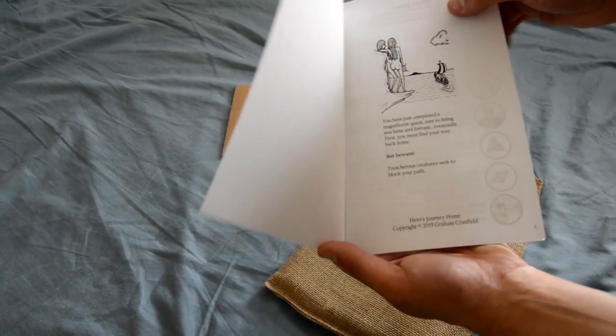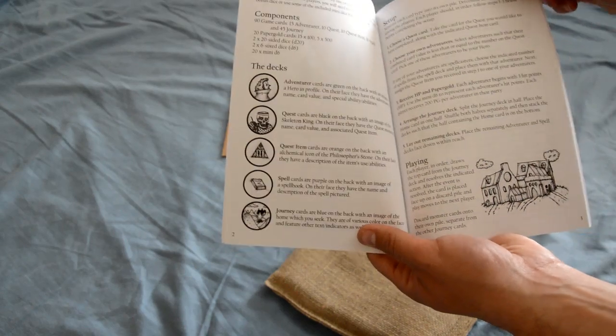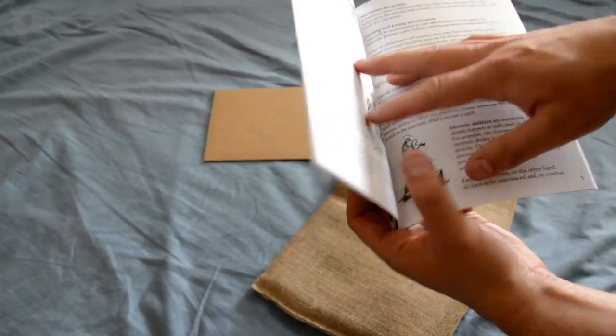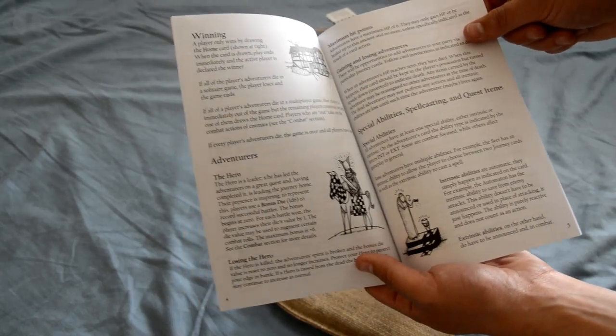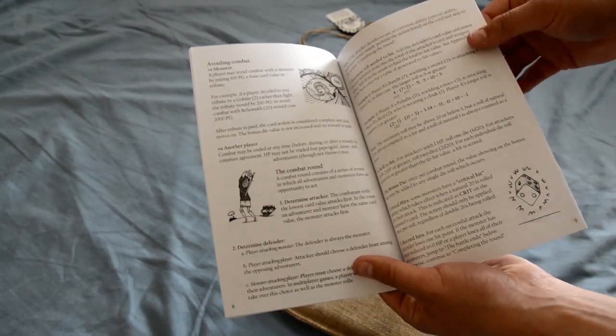The rulebook, which models its design off the back of the playing cards, leaves no room for uncertainty when regulating play. From turn sequence to individual card explanations, Heroes Journey Home's rulebook is the Rosetta Stone for this tabletop RPG.